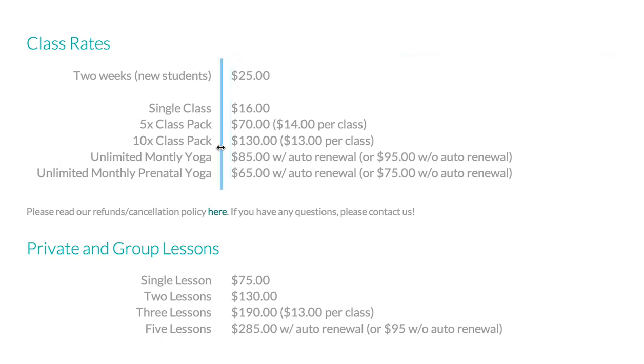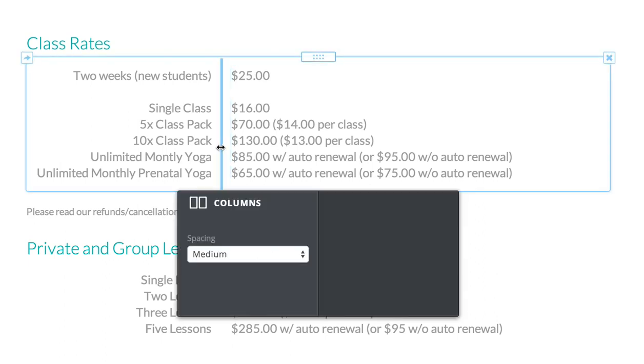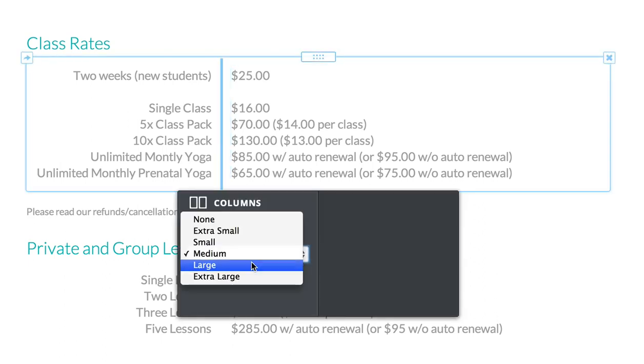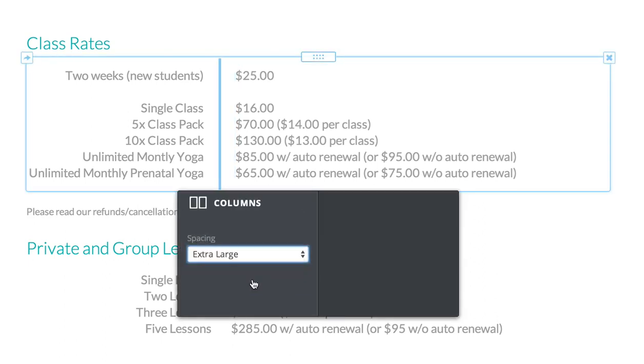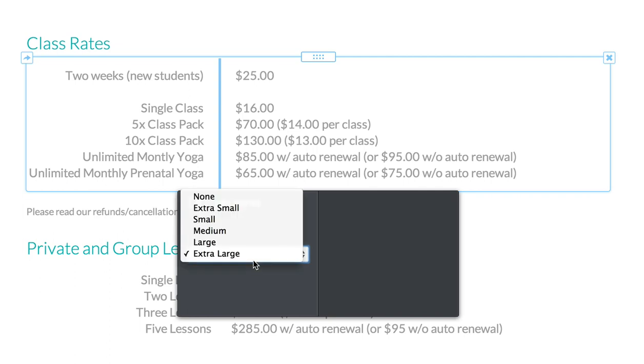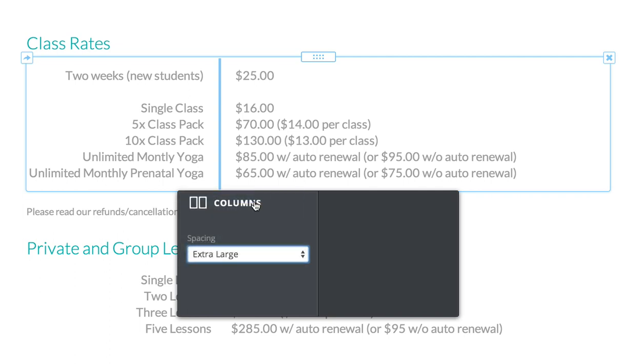You can also still adjust the amount of space between each column by clicking right on the column divider and using the space setting.